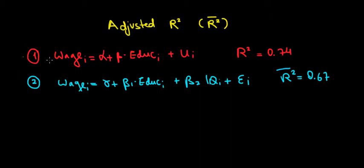Suppose we have this first regression where we have the simple relationship between education and wage. The R-square in this case is 0.74, meaning 74% of variation in wages is explained by education.